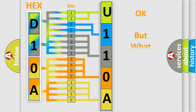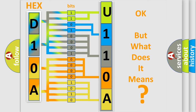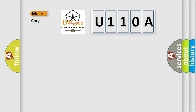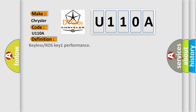We now know in what way the diagnostic tool translates the received information into a more comprehensible format. The number itself does not make sense to us if we cannot assign information about what it actually expresses. So, what does the diagnostic trouble code U110A interpret specifically for Chrysler car manufacturers?